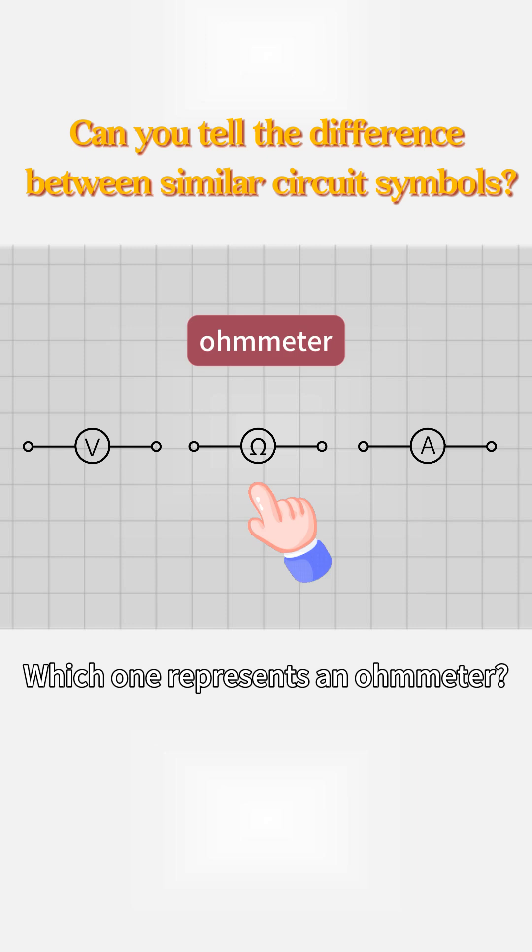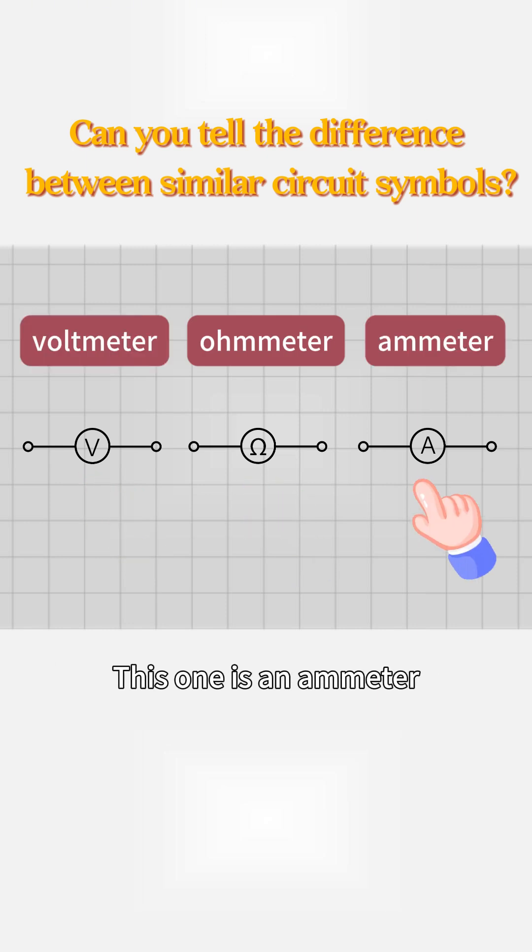Which one represents an ohmmeter? This one is an ohmmeter. This one is a voltmeter. This one is an ammeter.